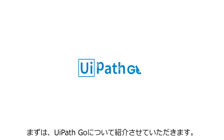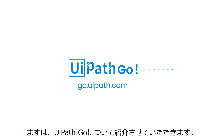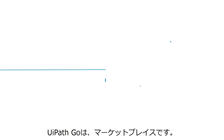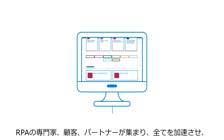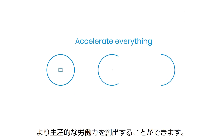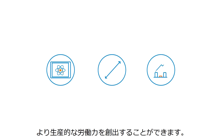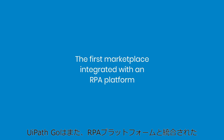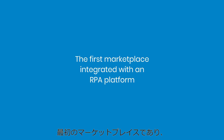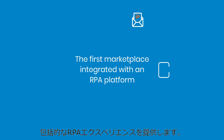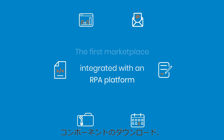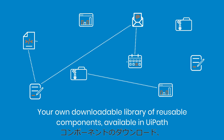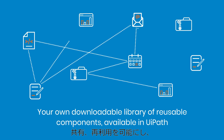Introducing UiPath Go, the marketplace where RPA experts, customers, and partners come together to accelerate everything and create a more productive workforce. Go is the first marketplace integrated with an RPA platform to give you a holistic RPA experience, with the ability to download, share, and reuse components.